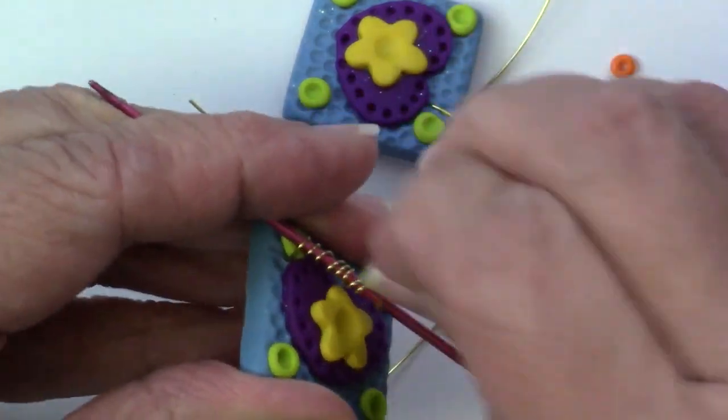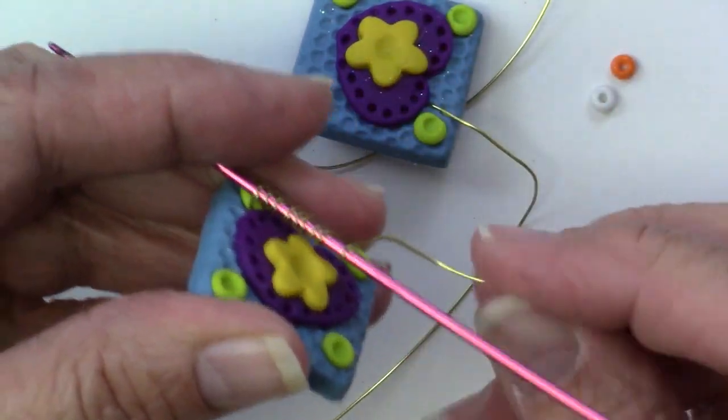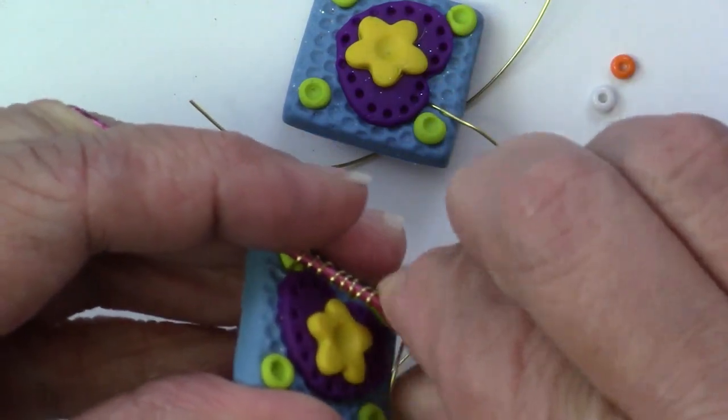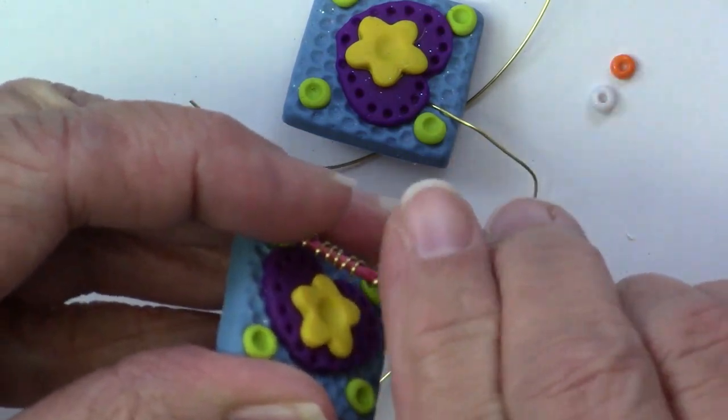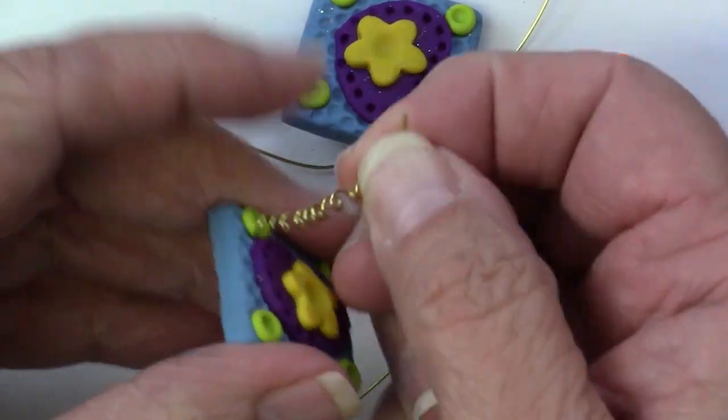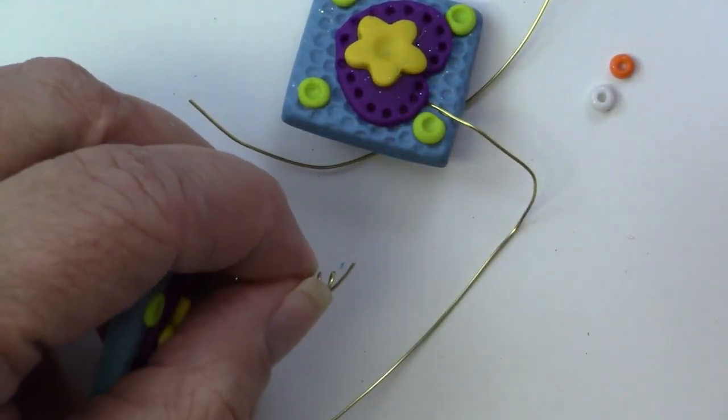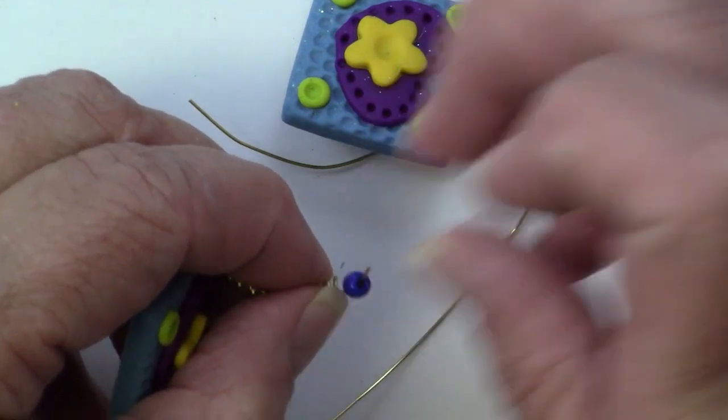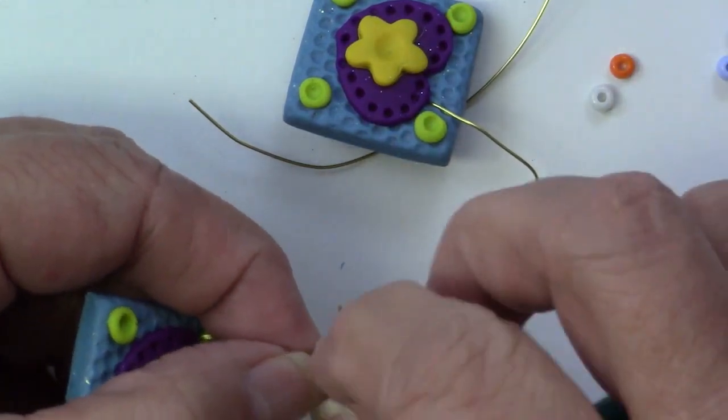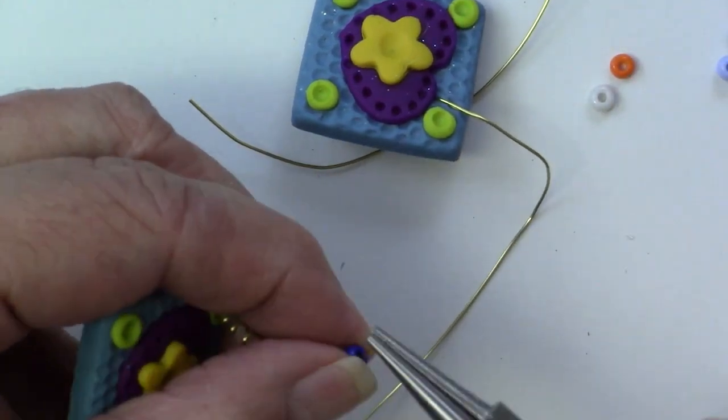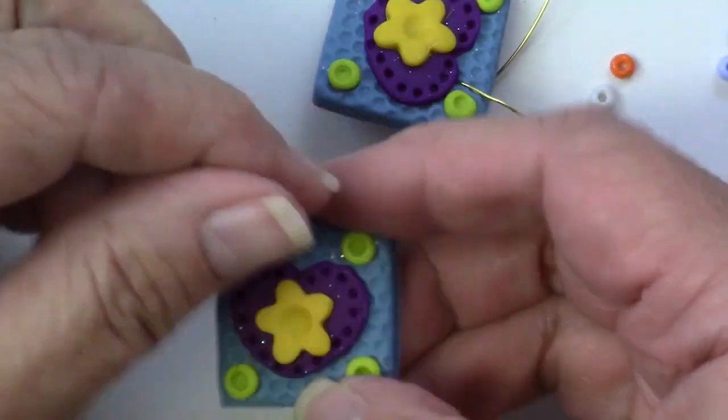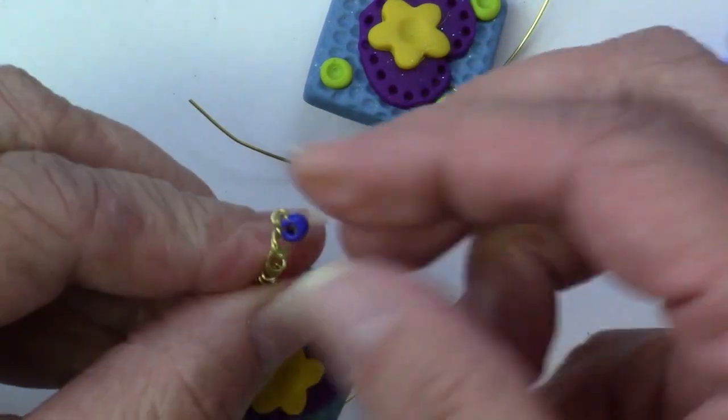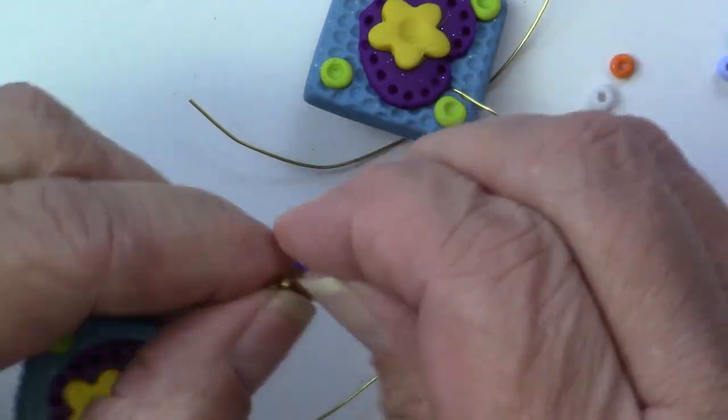You don't want to go all the way to the end but you want to go pretty close to the end. And then we're going to add the seed bead. This is one of the larger ones. I think it's a 6-0 but I'm not sure about that. So I just use my jewelry pliers to put a little twist at the end so that that seed bead doesn't come off.